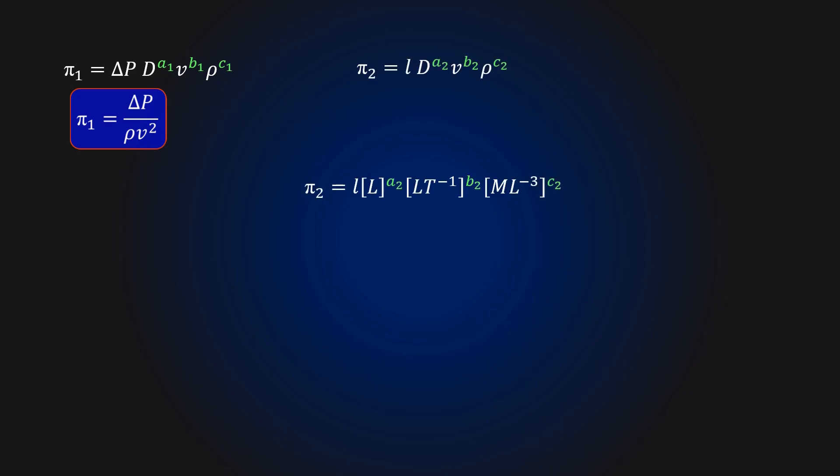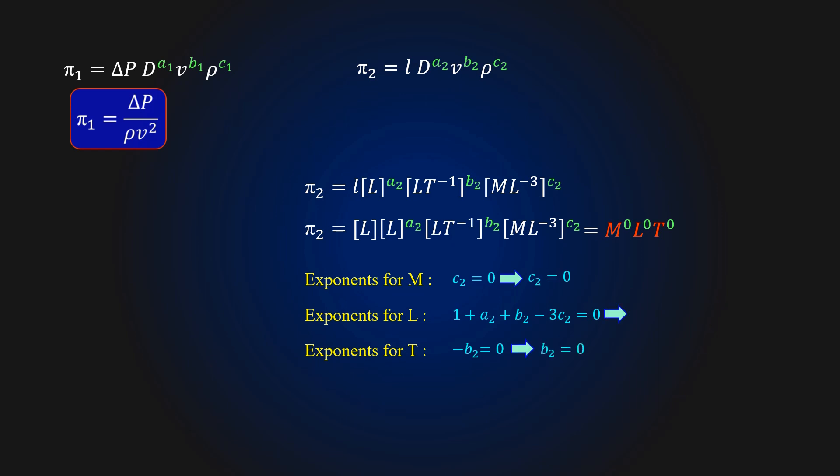we equate exponents of the primary dimension of these parameters to 0. The equation for exponents of mass is given as, the equation for exponents of length is given as, the equation for exponents of time is given as. On solving we get c2 equal to 0, b2 equal to 0 and a2 equal to minus 1. Finally, we get the expression for pi2 as l by d.